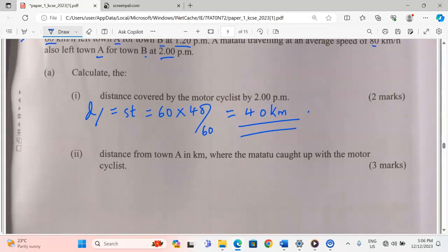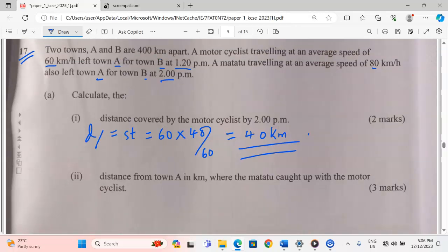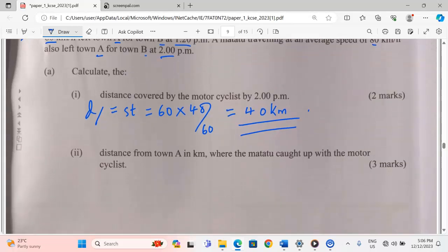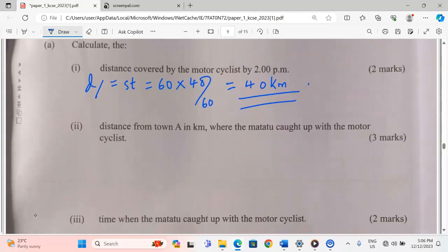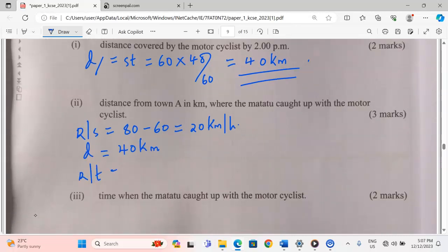In the second part, distance from town A in kilometers where the matatu caught up with the motorcyclist. The matatu is starting at a higher speed, so given time it will catch up with the motorist. We first get relative speed. Relative speed will be a speed of 80 minus a speed of 60 because they are going in the same direction, so 20 kilometers per hour. The distance between them equals 40 kilometers. The relative time taken for them to meet will be this distance out of the speed, giving us exactly 2 hours.